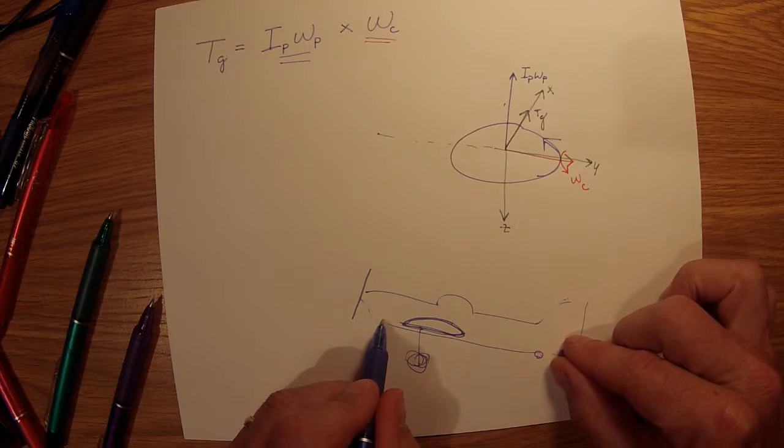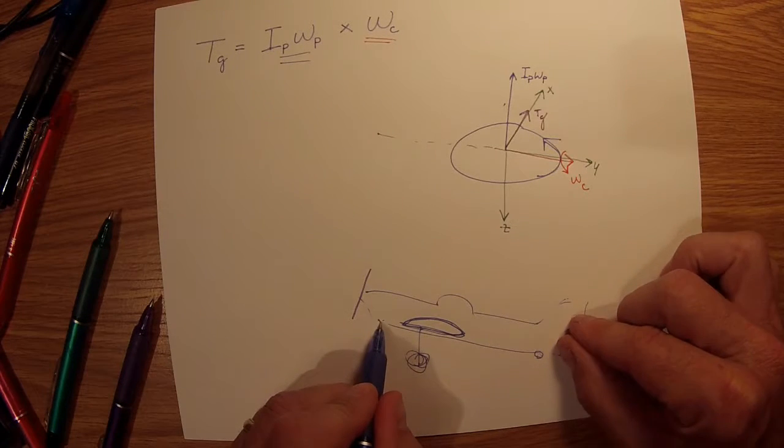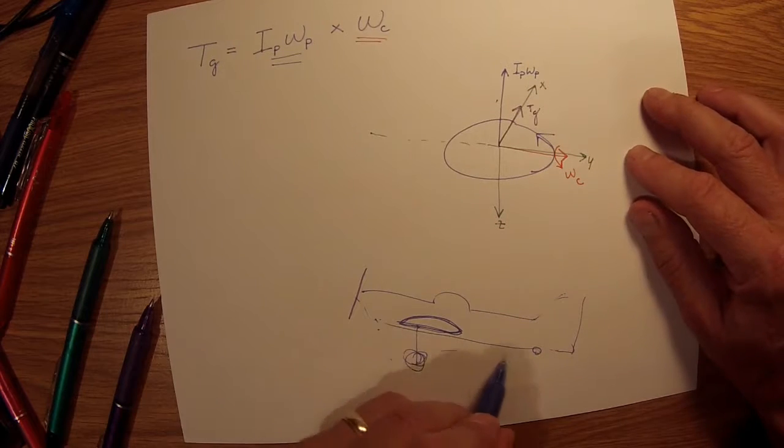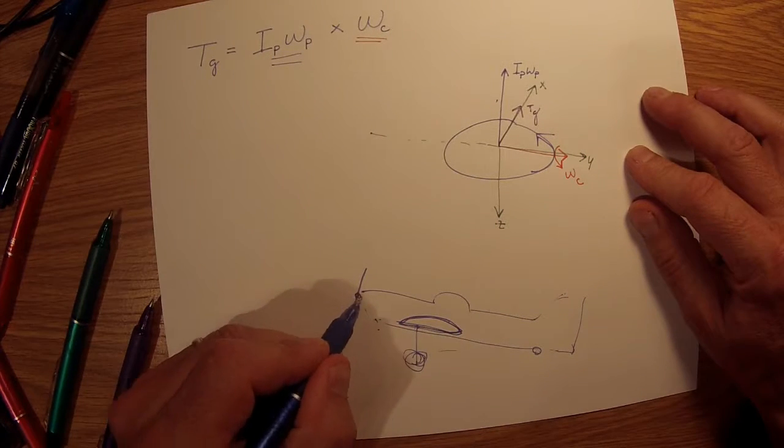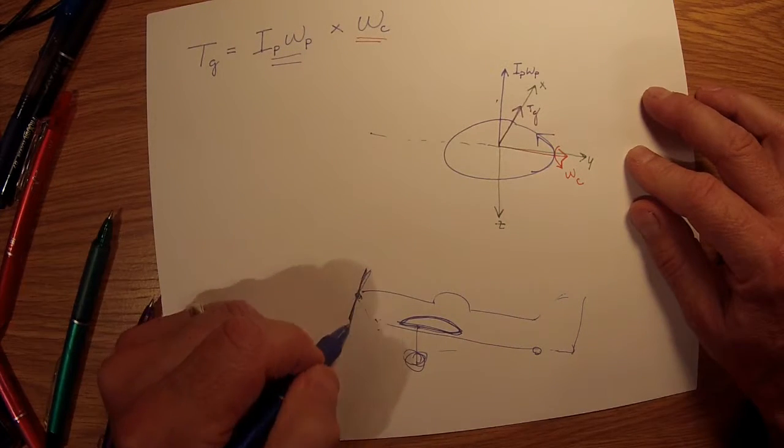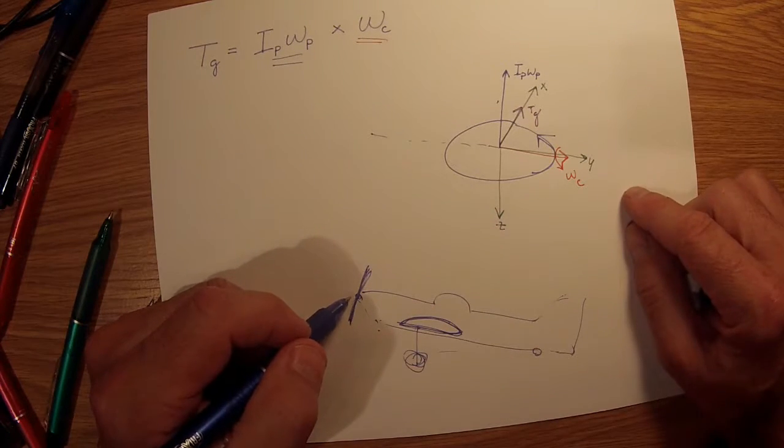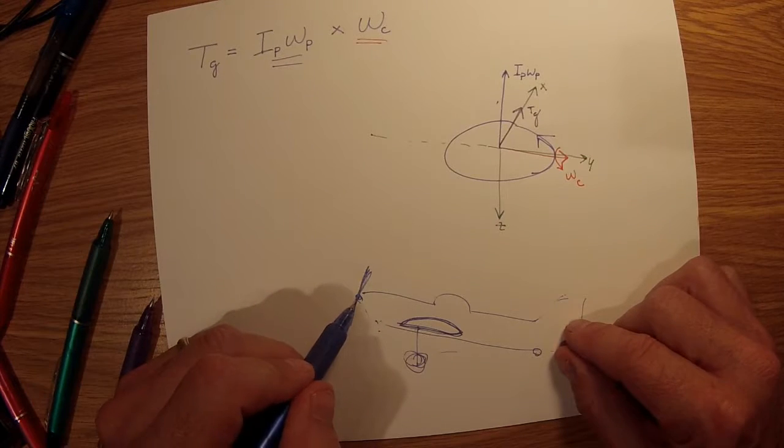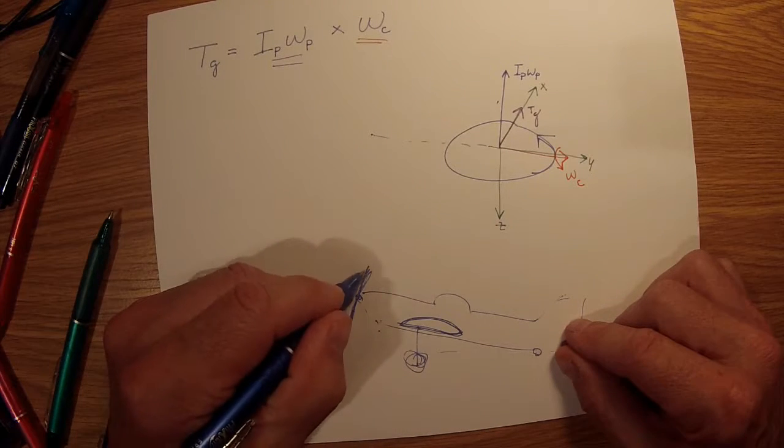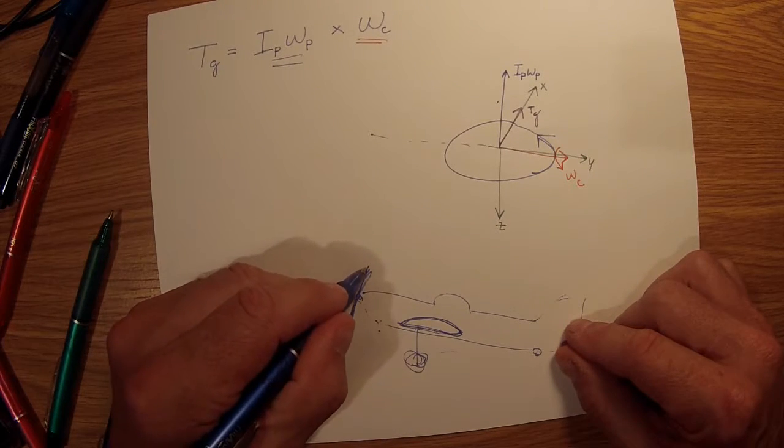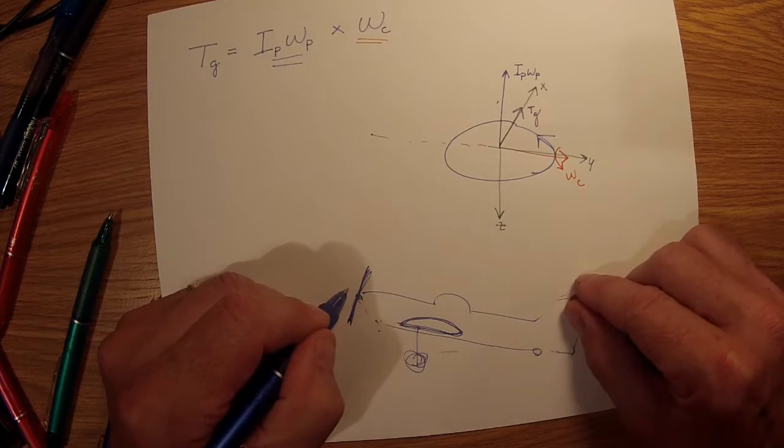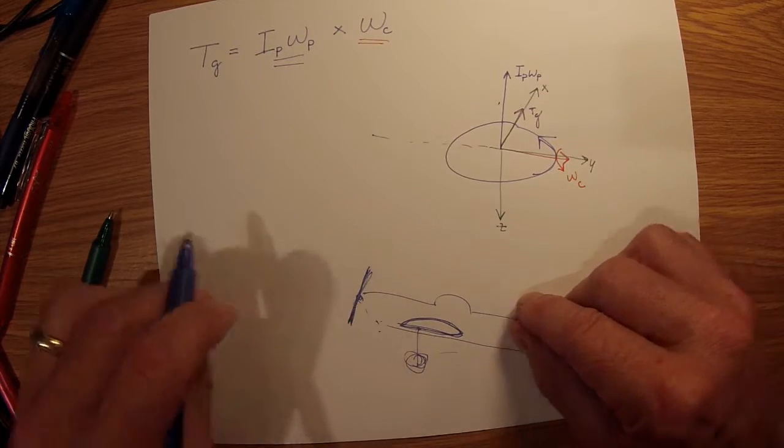It's speeding down the runway. Now at some point, when enough lift is generated by the wings, the tail is going to lift up, right? And let's say that's about 15 degrees. So this propeller is spinning—we're looking at it on edge—and at some point that plane of rotation of that propeller is going to come vertical because the tail is going to come off the ground, and then of course the plane is going to take off.